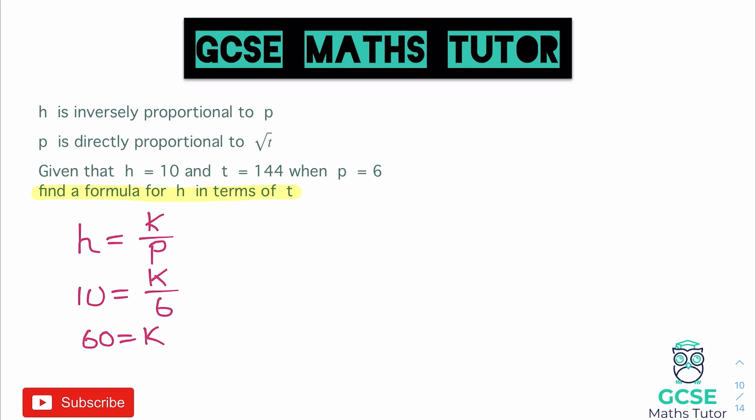Or you could write that as k equals 60. And there we go, we've got our first one of these formulas here. So we'll put that 60 back into our formula and we have h is equal to 60 over p. And we'll just highlight that because that's our first formula there. And now we'll have a look at the second one.